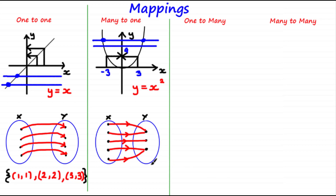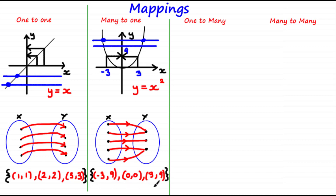You should also be able to determine this type of mapping by looking at a set of ordered pairs. Using y equals x squared, when we substitute x equals negative 3 we get 9, and when we substitute x equals 3 we also get 9. From these ordered pairs you can see there are two different values of x which give us the same value of y — therefore this is a many-to-one mapping.